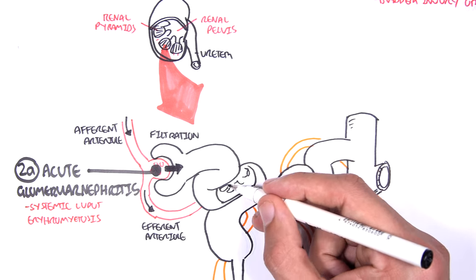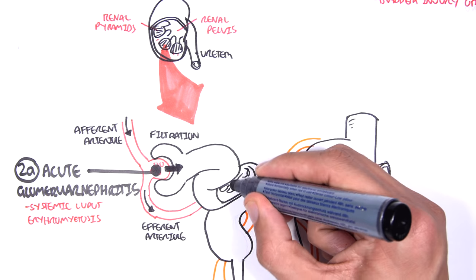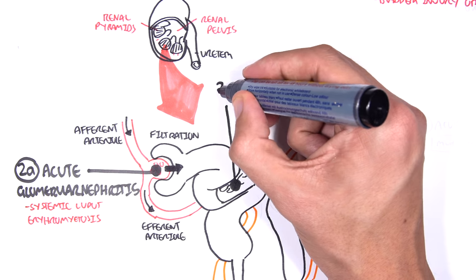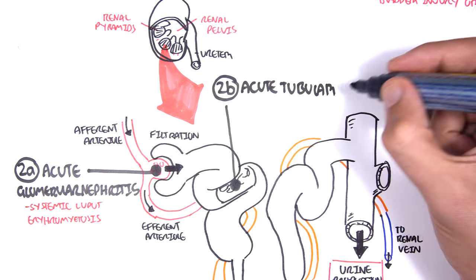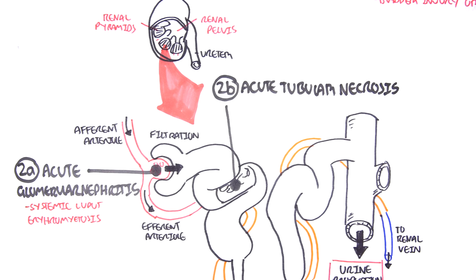The second type of intra-renal cause of acute renal failure is acute tubular necrosis. And this is actually the main sort of sign we see in acute renal failure, which is death of cells within the nephron.